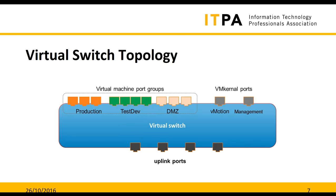You then have your VMkernel ports — your management port and your vMotion port. Fibre Channel over Ethernet and iSCSI are also performed on VMkernel ports. Your VMkernel ports are the ports that ESXi itself uses for its operations. Your virtual machine port group ports are used by virtual machines themselves, not the host. You would not connect to a virtual management port that was in a virtual machine port group — that doesn't work that way.